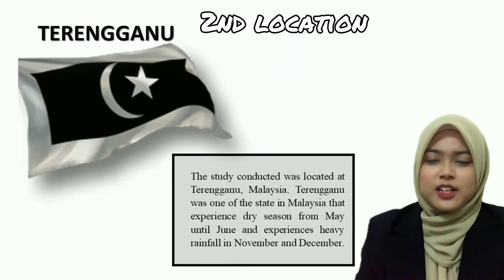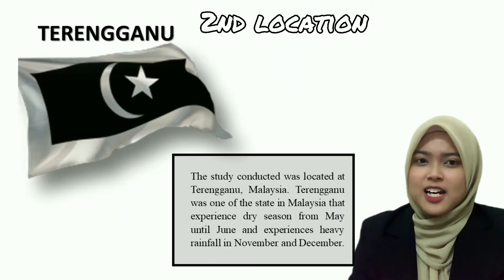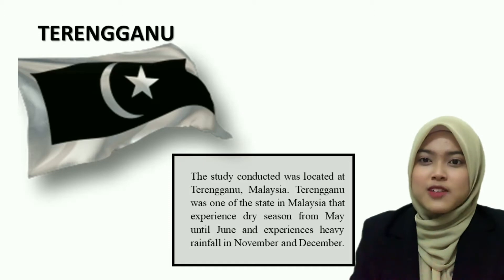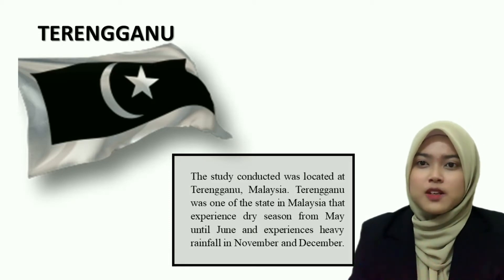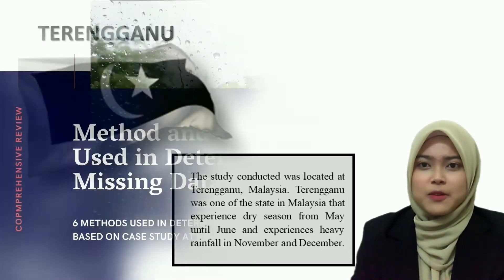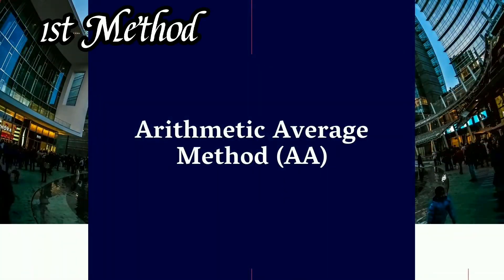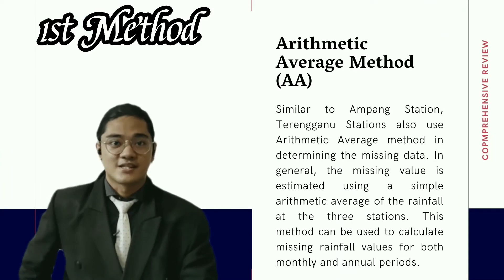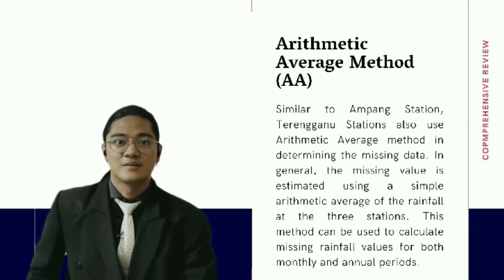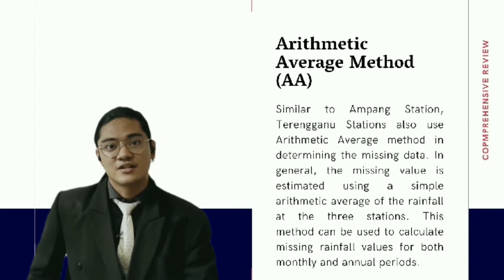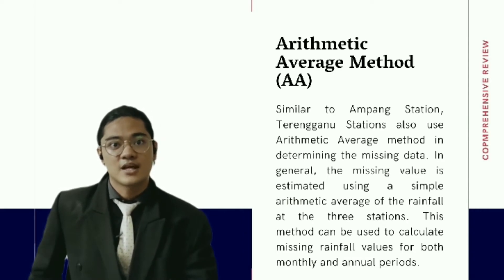The study was also located at Terangganu, Malaysia. Terangganu is one of the states in Malaysia that experiences a dry season from May until June and heavy rainfall in November and December. Similar to Ompang Station, Terangganu Station also used the arithmetic average method in determining the missing data. In general, the missing value is estimated using a simple arithmetic average of the rainfall from three stations.